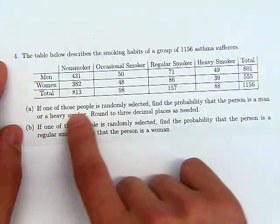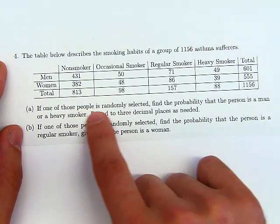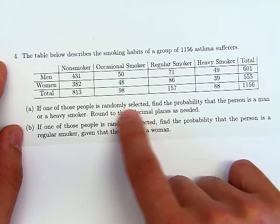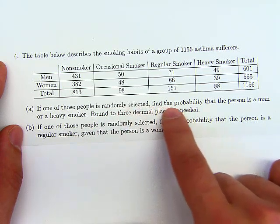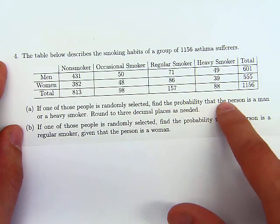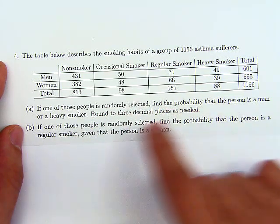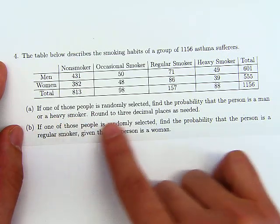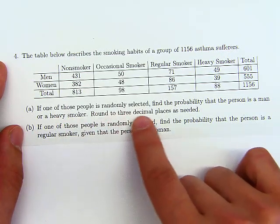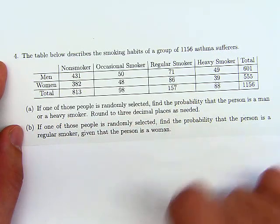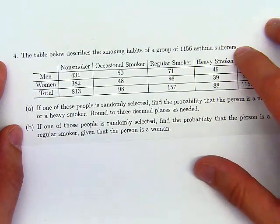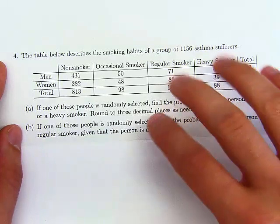The first question says: if one of these people is randomly selected, find the probability that the person is a man or a heavy smoker. Round to three decimal places as needed.